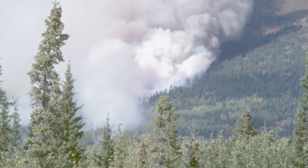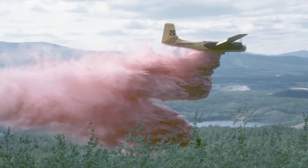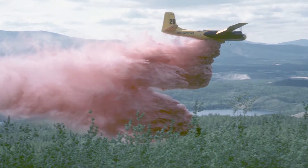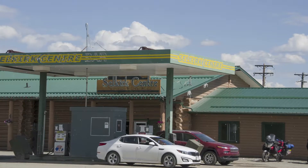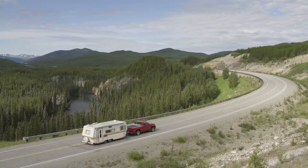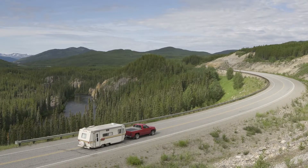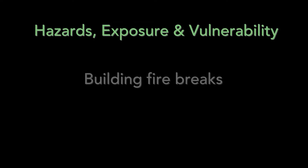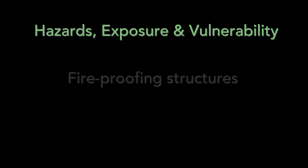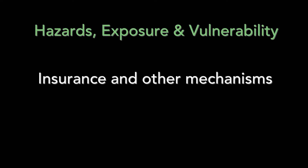Take wildfires as an example. Wildfire is a hazard that occurs naturally but is influenced by climate change, meaning warmer temperatures lead to hotter, drier seasons, which lead to a higher probability of fires. People in buildings, roads, and infrastructure surrounded by forest areas are exposed to this hazard. The vulnerability of exposed populations, assets, and values depends on their susceptibility to the hazard and also their capacity to adapt. Vulnerability can be reduced by limiting forest fire fuel loads, building firebreaks, and fireproofing homes and properties via metal roofing, combustion resistant siding, and landscaping. Adaptive capacity can be increased through insurance or other mechanisms that enable those affected to rebuild.